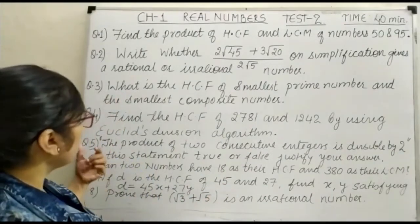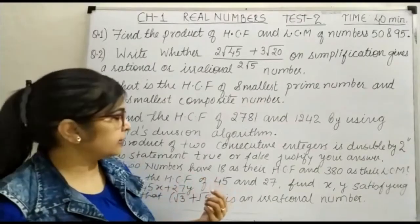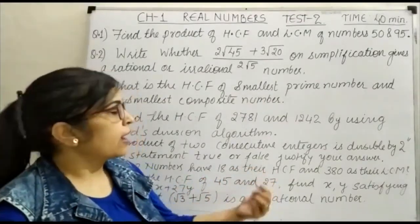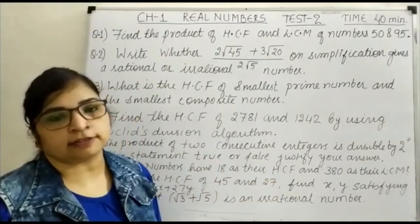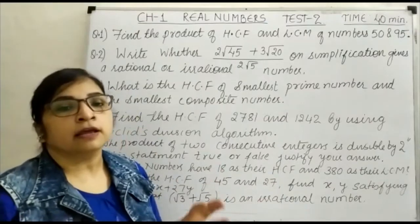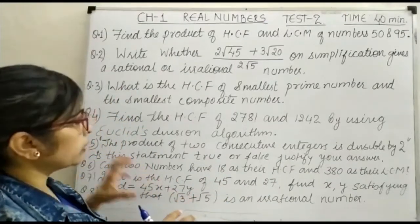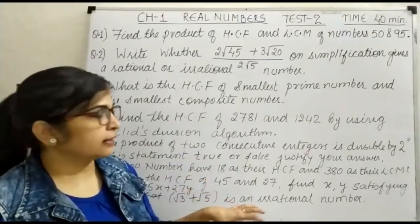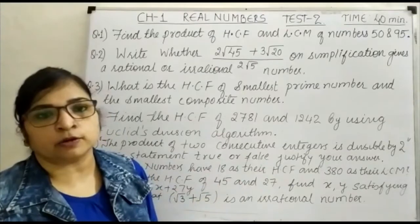Next, question number 6: can 2 numbers have 18 as their HCF and 380 as their LCM? The question is asking you whether you can have 2 numbers with HCF as 18 and LCM as 380. You have to write yes or no. Again, you have to justify your answer there.